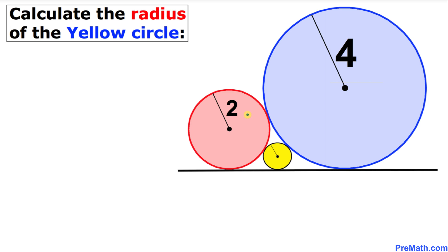Welcome to PreMath. In this video tutorial we are going to calculate the radius of the yellow circle, which is the smallest one. We also have three circles: the blue circle has radius 4, the red circle has radius 2, and all these circles are pairwise tangent to each other, and this horizontal line is our line of tangency.